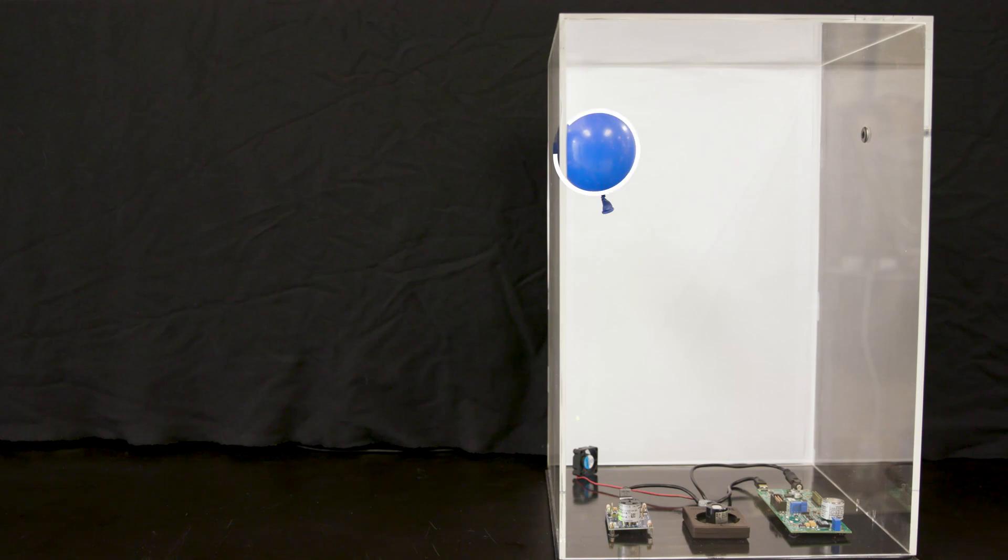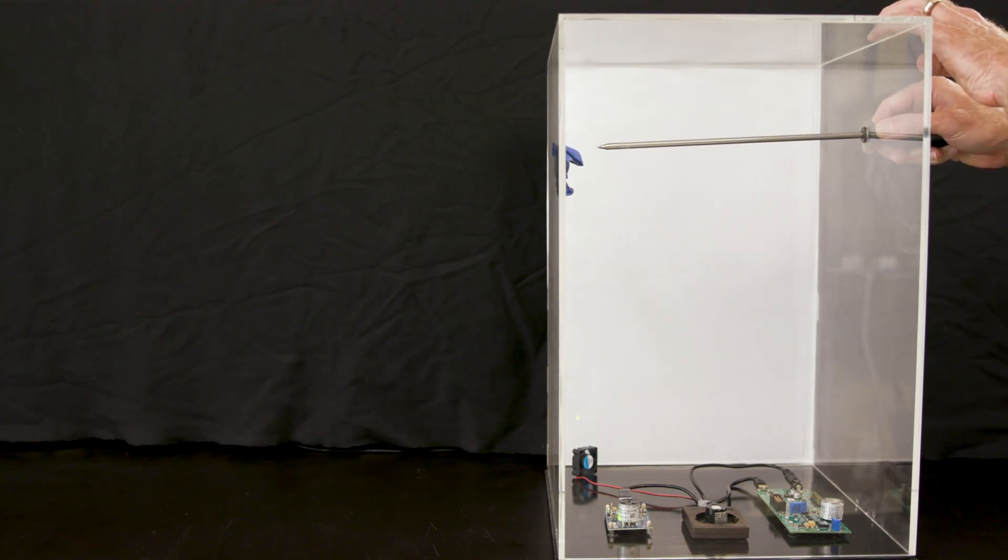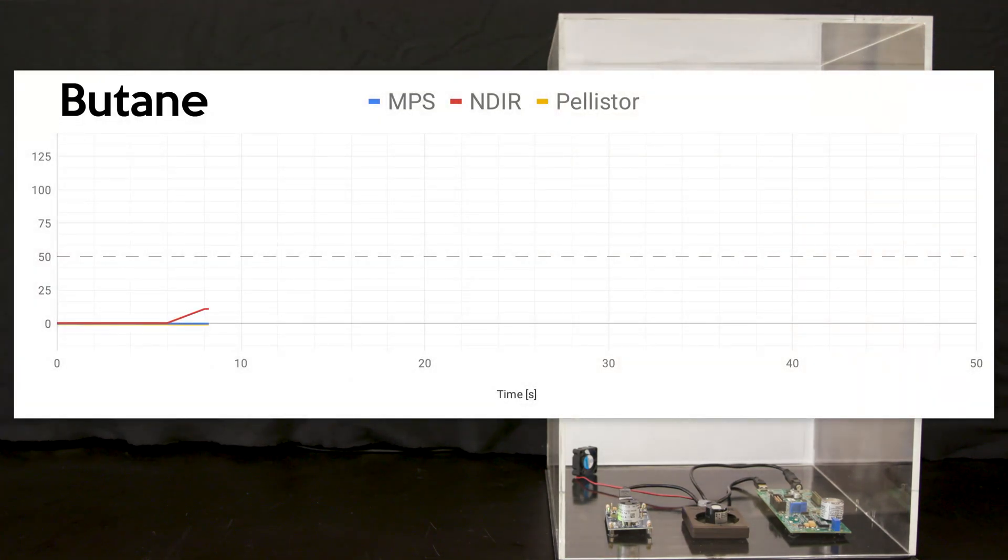Okay, next in the tank we have butane. So this is a balloon filled with the equivalent of 50% LEL butane for this particular volume. And I will pop it just like I popped the last balloon. I'll let the gas circulate in there. So butane, the NPS will be accurate for. The NDIR and the pellistor will both detect it, but will be highly inaccurate for it.